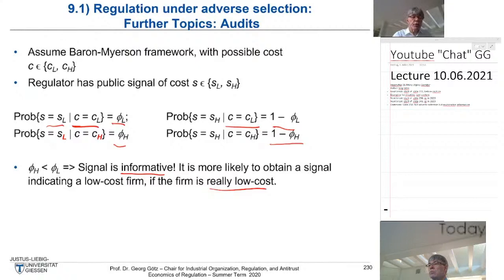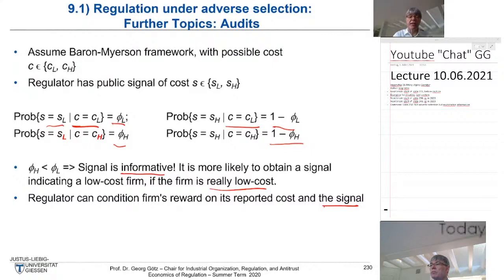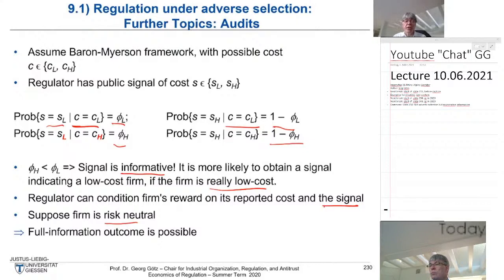An important assumption here is that the firm is risk neutral — we will discuss risk neutrality, risk aversion, and risk-loving behavior in more detail in the chapter on moral hazard. The key result is: even though you get a noisy signal, even though the signal is not perfect, the full information outcome is possible. The regulator can condition the firm's contract — its reward — on both its reported cost and the signal.